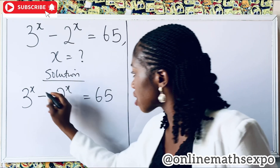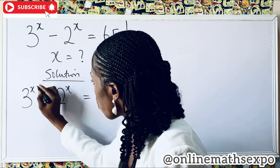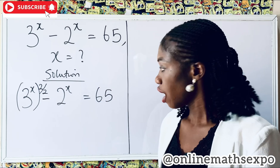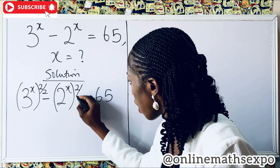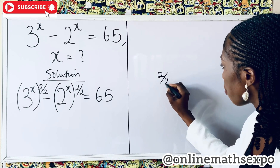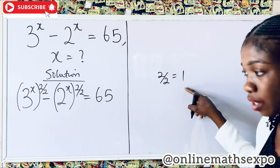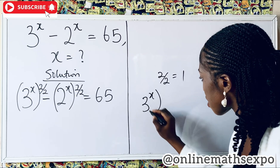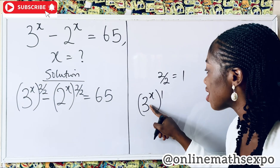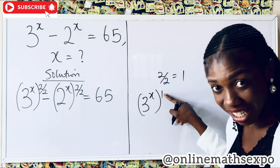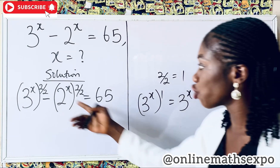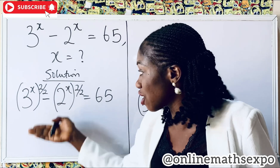We can choose to raise this to the power of 2 over 2, and also do the same here, to the power of 2 over 2. You know that 2 over 2 is 1. So if you have 3 to the power of x raised to the power of 1, anything raised to the power of 1 is that value itself. The whole of this will still give you 3 to the power of x. So doing this has not changed anything — it's still the same.